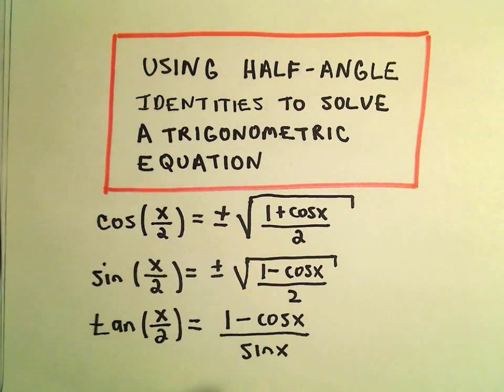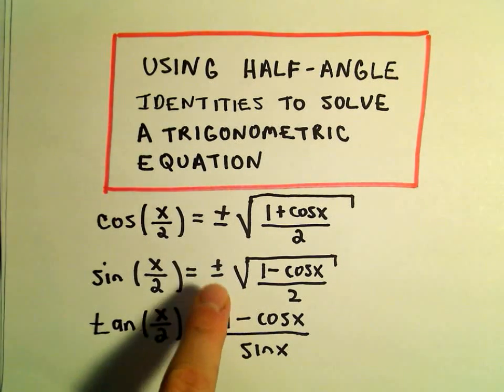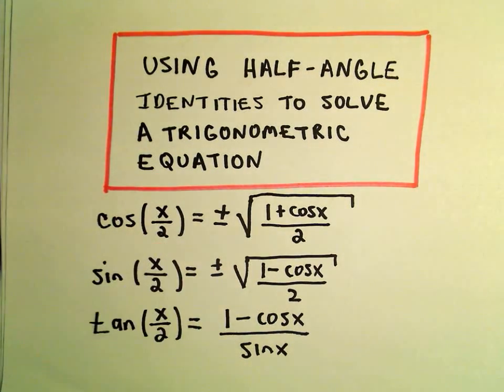Notice for cosine and sine there's kind of a choice, positive or negative. Basically, you're going to have to think about the quadrant that your angle is in and then determine if it's positive or negative.